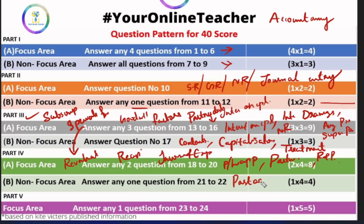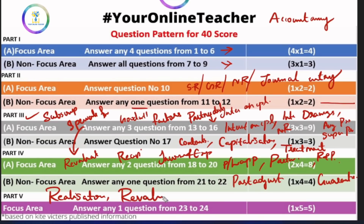We will talk about past adjustments and the guarantee of a partner. The guarantee means the capital account has to be adjusted to the capital account. Then in part 5, the revaluation account and income/expenditure with adjustment are covered.